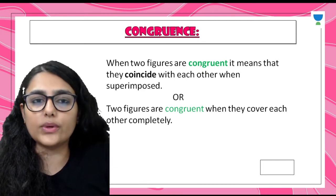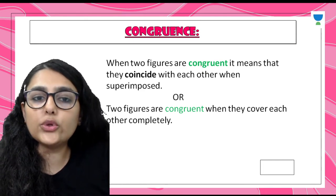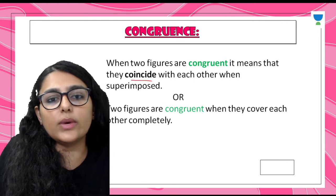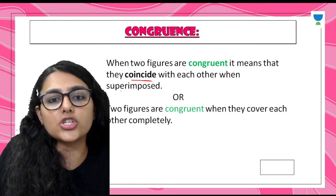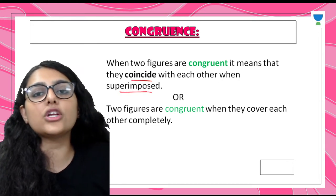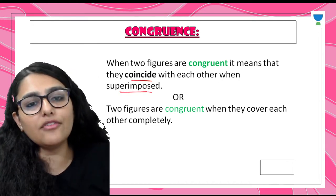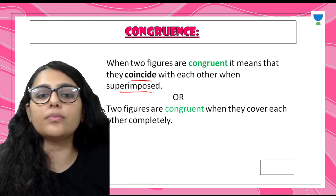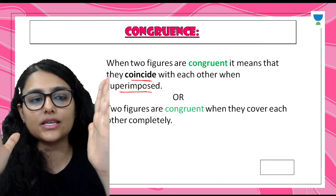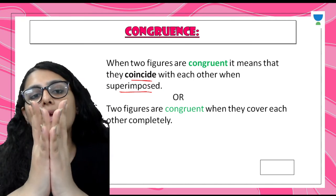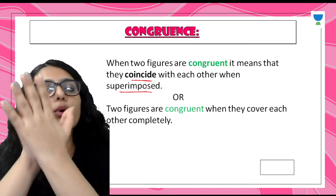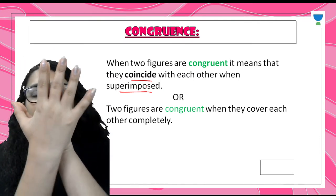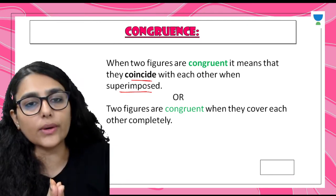Let's start with the topic. What is congruence? When two figures are congruent, it means that they coincide with each other when superimposed. Coincide means they cover each other completely. For example, our palms - if I keep them end-to-end, they are going to overlap each other, which means my hands are congruent.